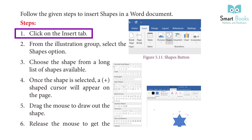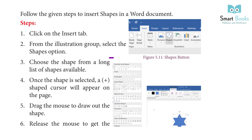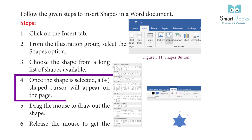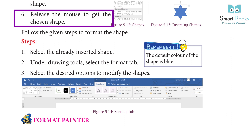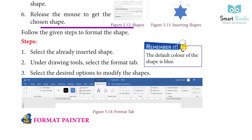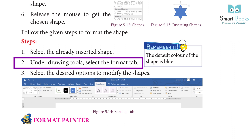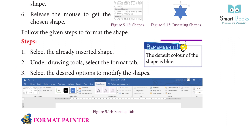Steps to insert a shape: Step 1: Click on the Insert tab. Step 2: From the Illustrations group, select the Shapes option. Step 3: Choose a shape from the long list available. Step 4: Once selected, a crosshair cursor will appear on the page. Step 5: Drag the mouse to draw the shape. Step 6: Release the mouse. To format the shape: Step 1: Select the inserted shape. Step 2: Under Drawing Tools, select the Format tab. Step 3: Select the desired option to modify the shape. Remember: the default color of the shape is blue.